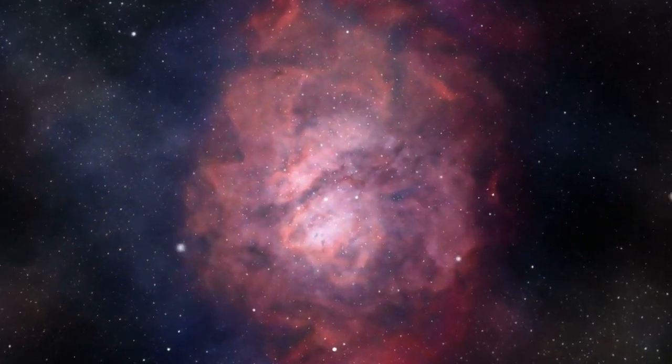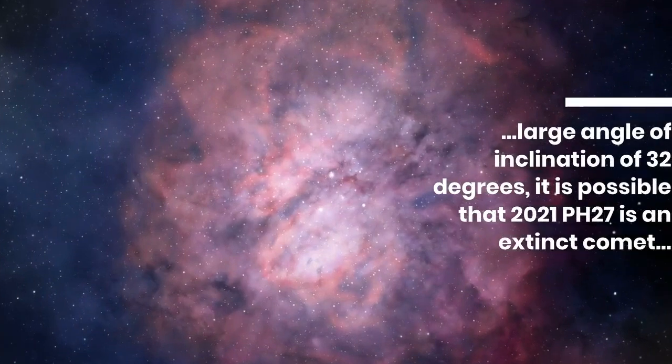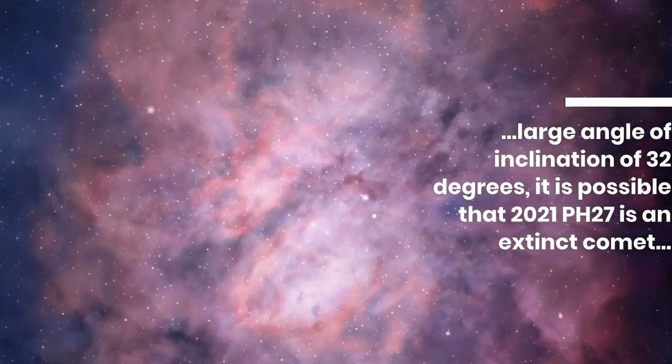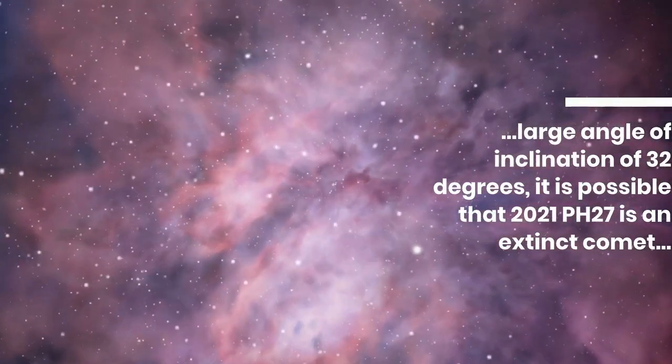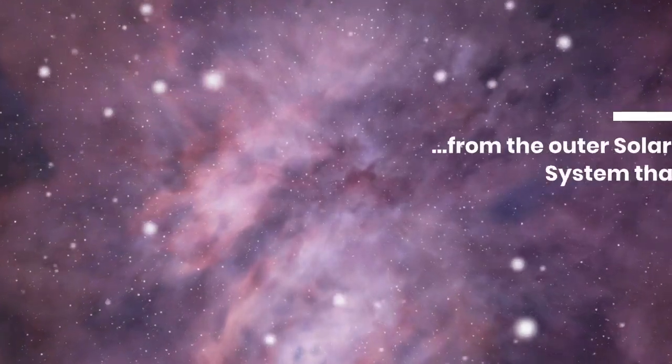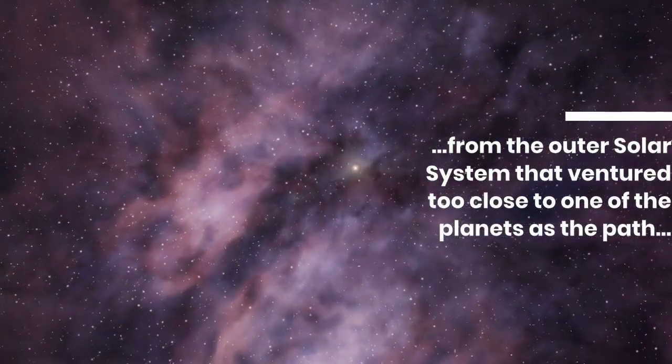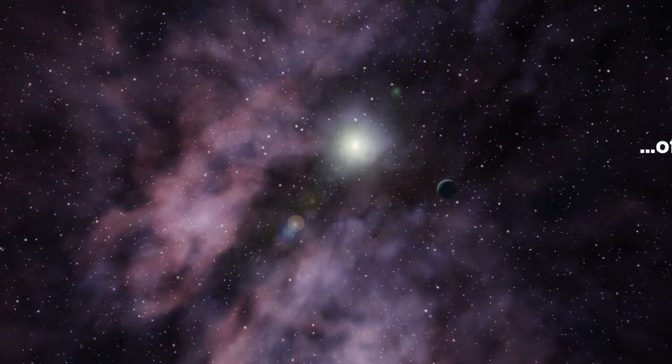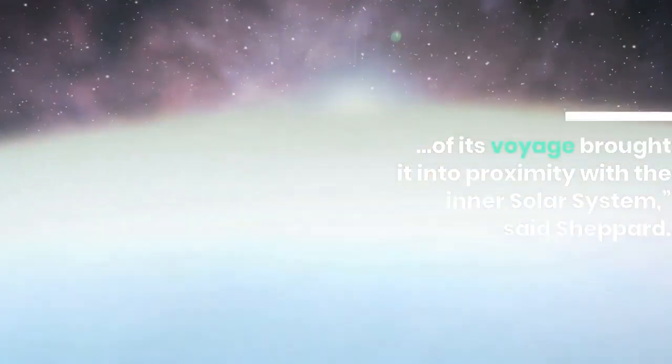Although, based on its large angle of inclination of 32 degrees, it is possible that 2021 PH27 is an extinct comet from the outer solar system that ventured too close to one of the planets as the path of its voyage brought it into proximity with the inner solar system, said Shepard.